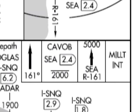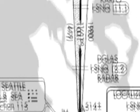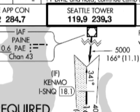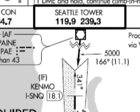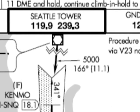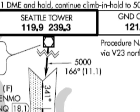Initial approach fix: PAIN is an example of an initial approach fix, and it's the most likely point that you would use if you were approaching from the north. Notice the 5,000 — this is the altitude that you should be at when flying this approach.